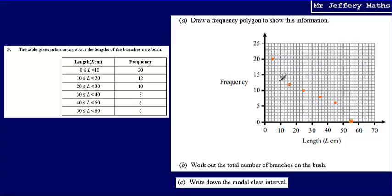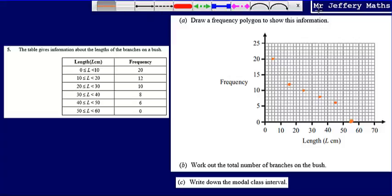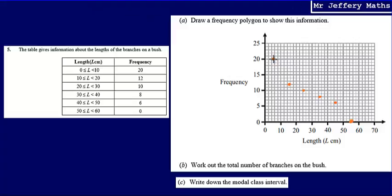Now, all that I then need to do to draw my frequency polygon, now I've plotted my points, is I just need to connect each of these points with a ruler. So I'm going to just connect those points with a ruler. So for part A, that's my frequency polygon drawn.